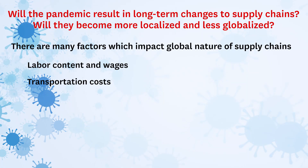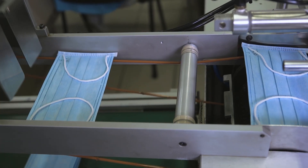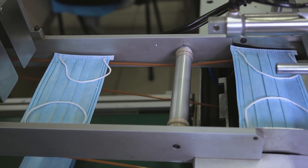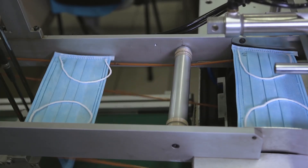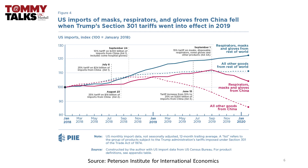Another important driver is lower ocean transportation costs, which have been declining substantially for the past 50 years thanks to container shipping. Supply chains also depend upon factors such as tariffs. We have a recent example with many medical supplies coming from China — over the last two years we've had an increase in tariffs, so imports from China have actually declined, but imports from other countries have increased correspondingly, as the accompanying chart shows.